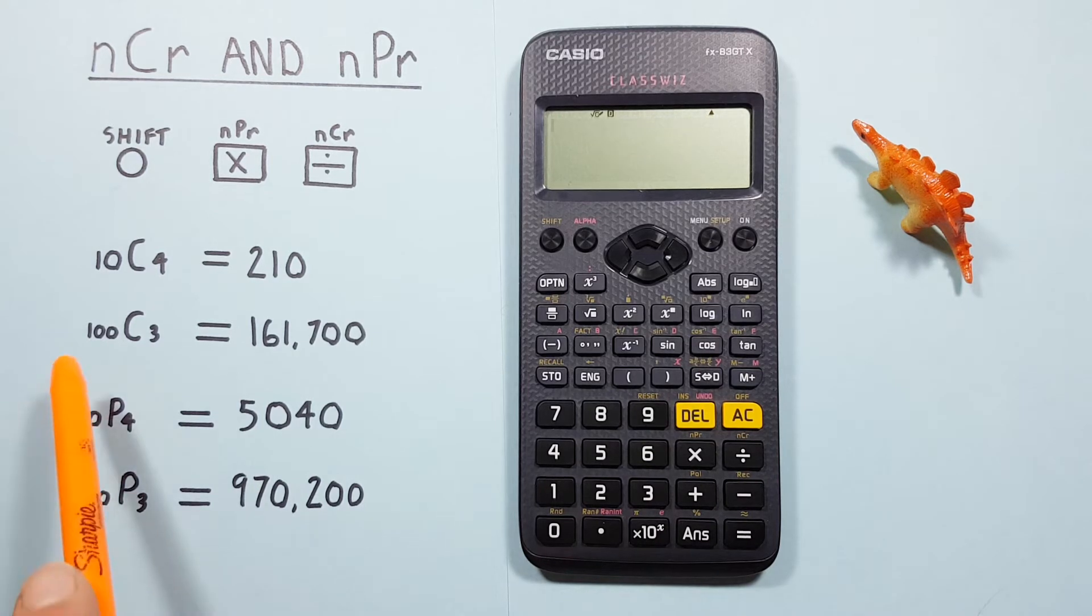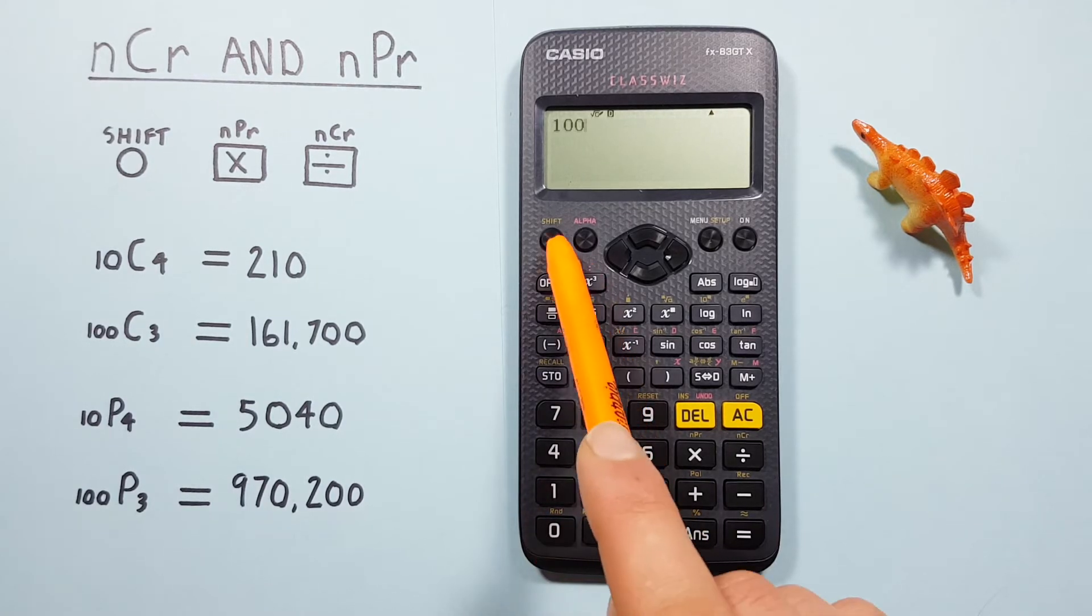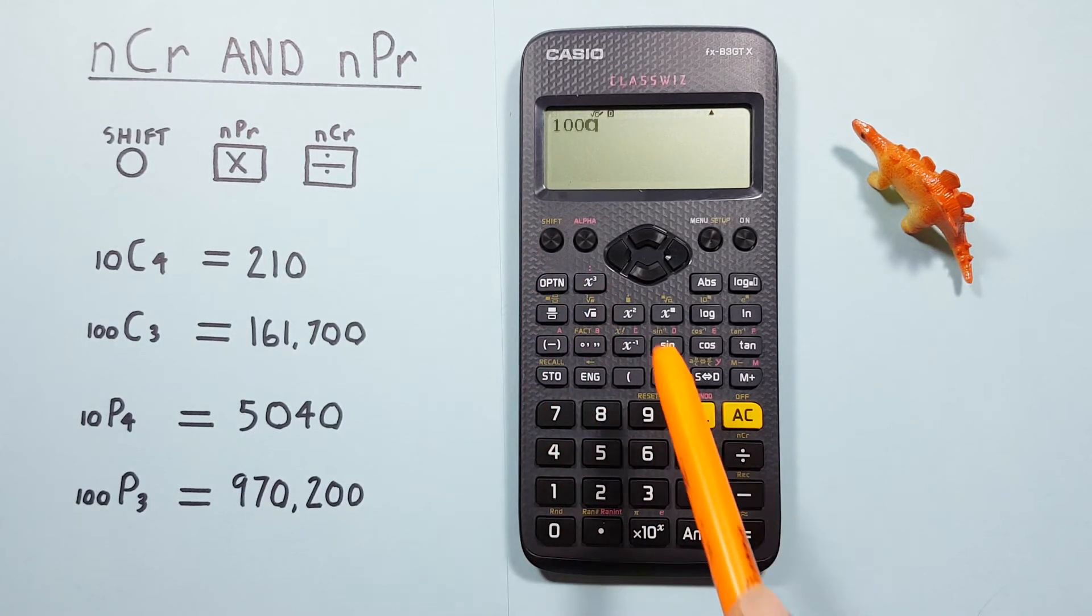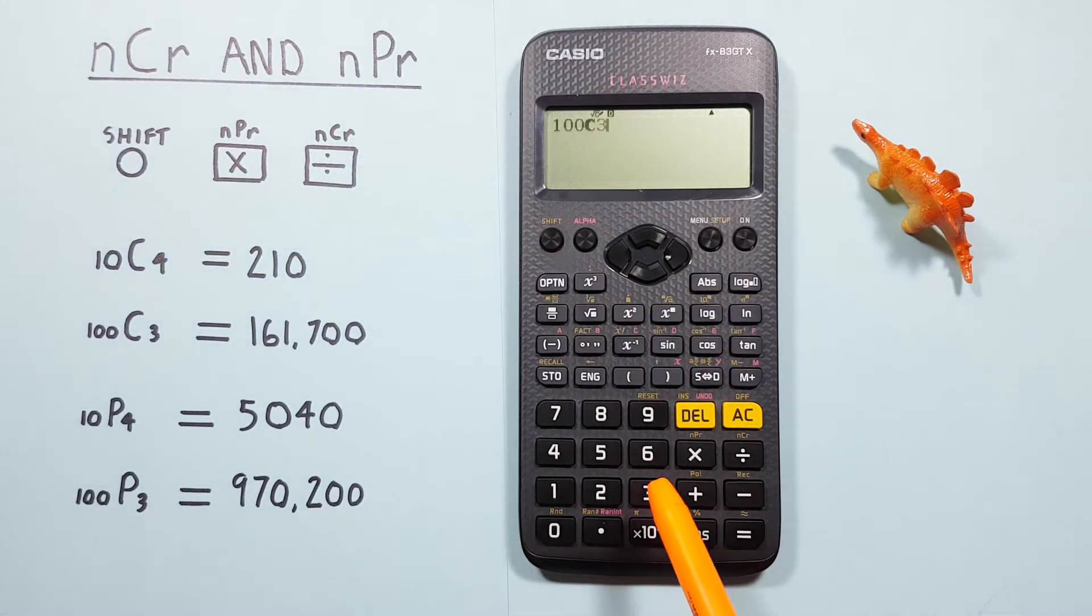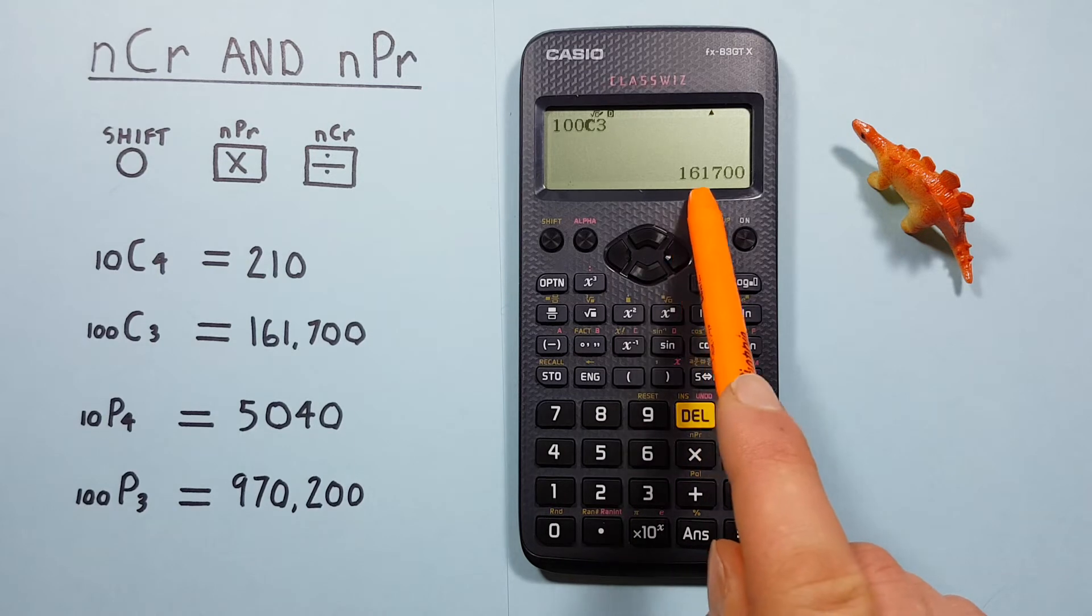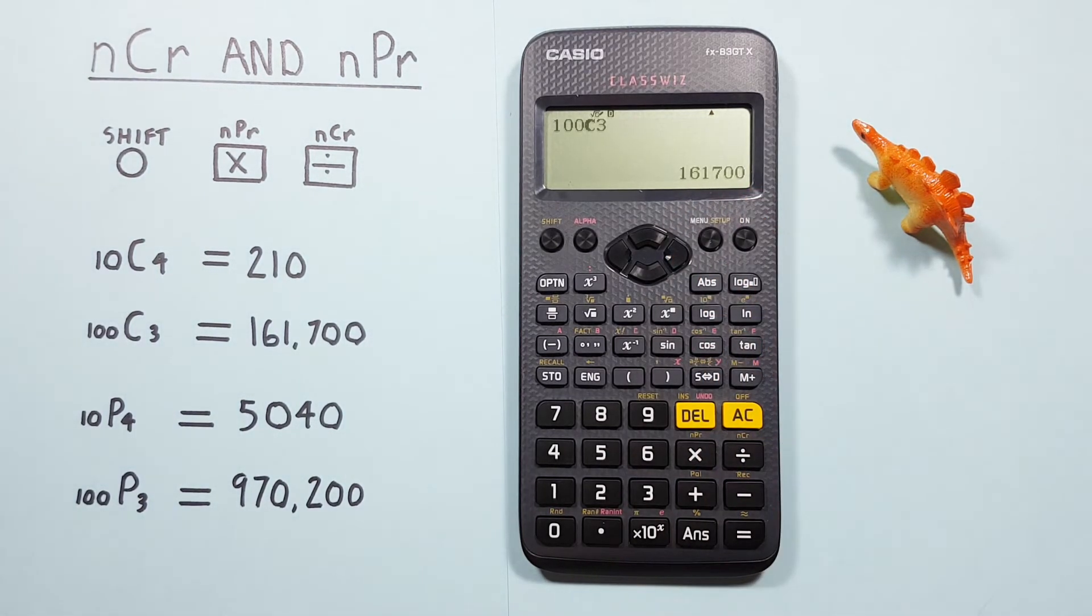Another example, if we have 100 choose 3 combinations, again we start by entering the 100, then the shift division key, so our C appears, and then 3 equals and we get 161,700 possible combinations.